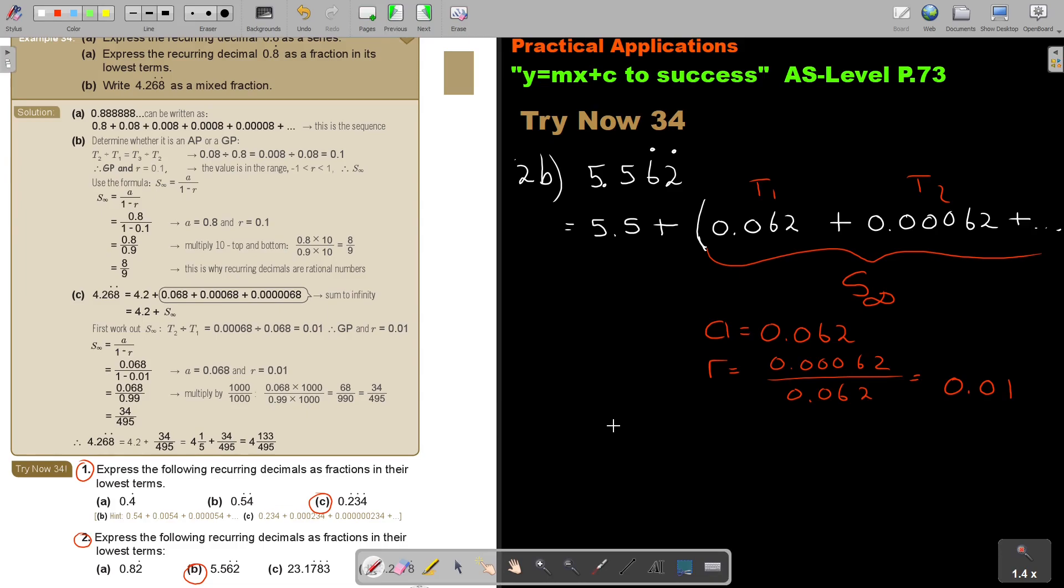So my S to infinity, 0.062 divided by 1 minus 0.01. And if I press that on the calculator, 0.062 divide 1 minus 0.01. And remember, shift ABC. So if I shift ABC, I get my vulgar fraction.